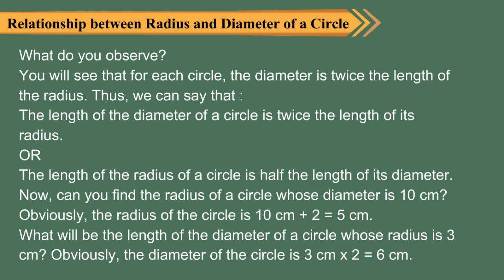What will be the length of the diameter of a circle whose radius is 3 centimeters? Obviously, the diameter of the circle is 3 cm × 2 = 6 centimeters.